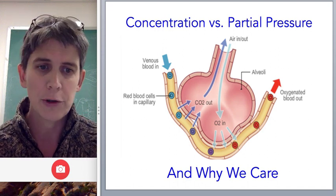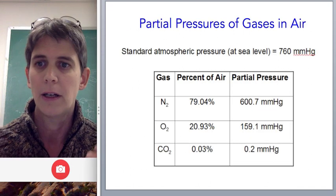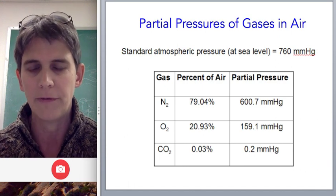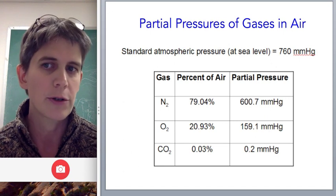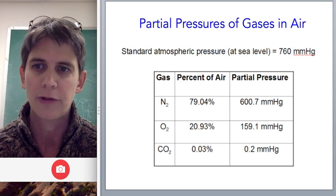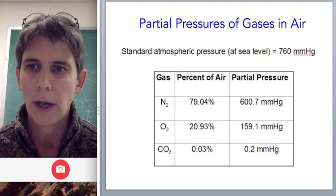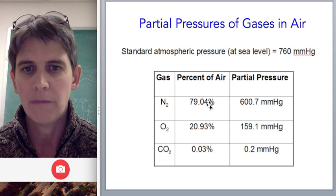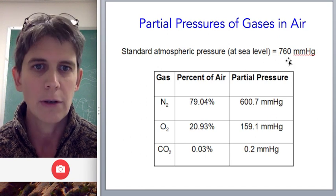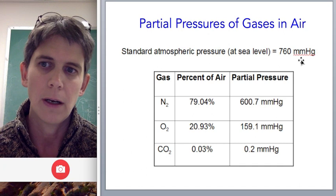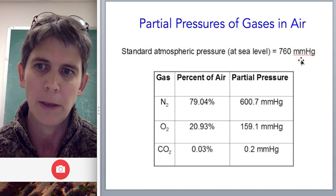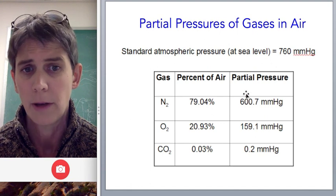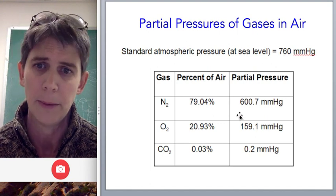In order to understand partial pressure, you first want to think about it in the simplest context, which is, what if the gases were all just in air? So we're going to ignore blood for just a minute. Well in air, partial pressure is a super easy concept. It's just, literally, the percentage of the total air that that gas makes up. So air is 79% nitrogen. So if you look at the total air pressure, which at sea level is 760 mmHg, well 79% of that 760 mmHg is going to be nitrogen. So that comes out to about 600 mmHg of nitrogen.